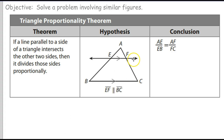Here's the Triangle Proportionality Theorem. It says if a line parallel to the side of a triangle intersects the other two sides, it has to divide those sides proportionally.